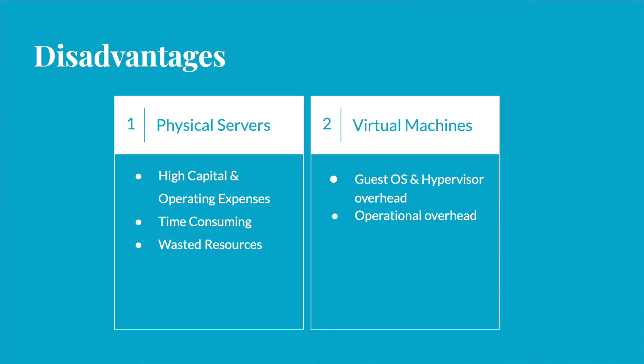Moving on to virtual machines — they were definitely a great step forward, because companies no longer need to buy a physical server and spend all that time setting it up. They can just partition one physical server and create multiple virtual machines on the same hardware. But it still wasn't good enough, because on each virtual machine you have to install a guest operating system, and there is a hypervisor used for managing all these VMs. These two things also consume a lot of resources, which is considered overhead. You also have to manage OS licenses and keep those operating systems patched and secure, which again is a waste of resources.